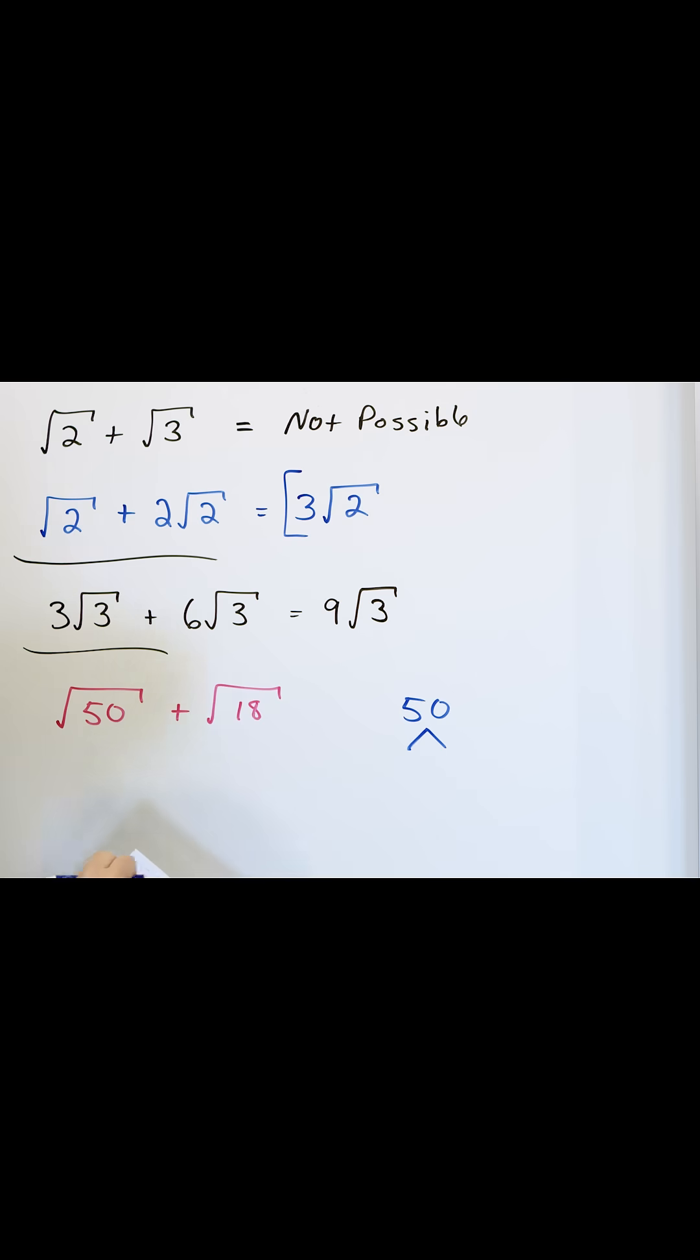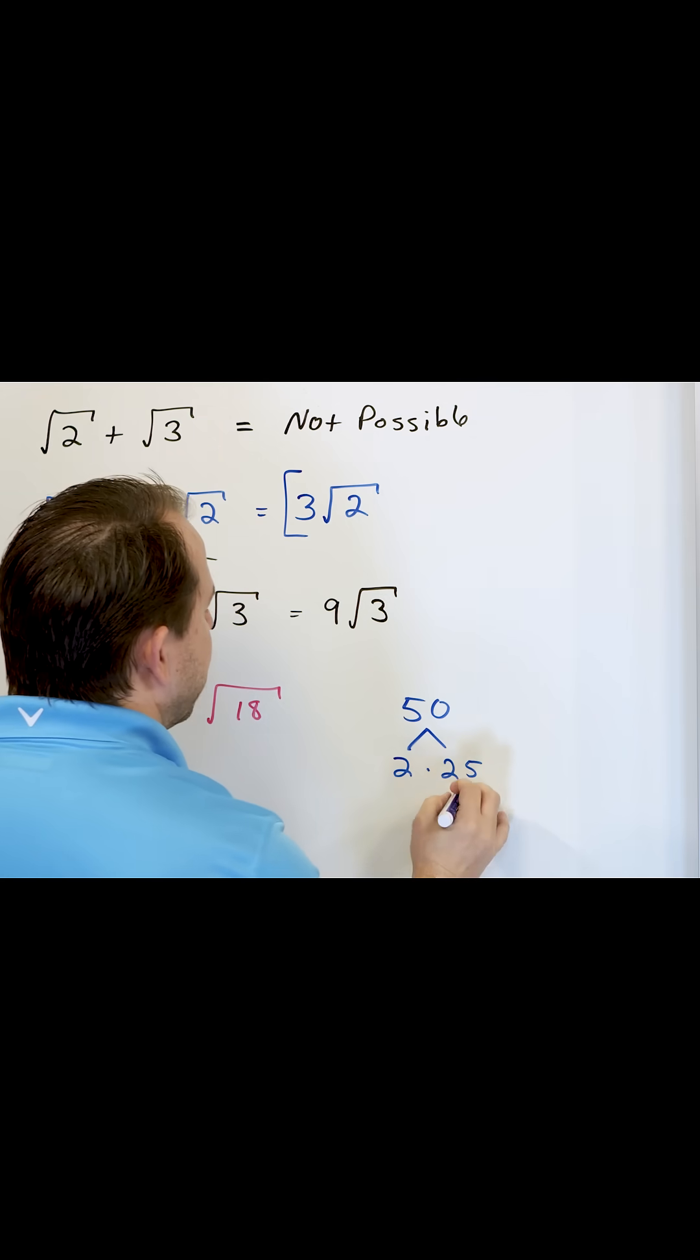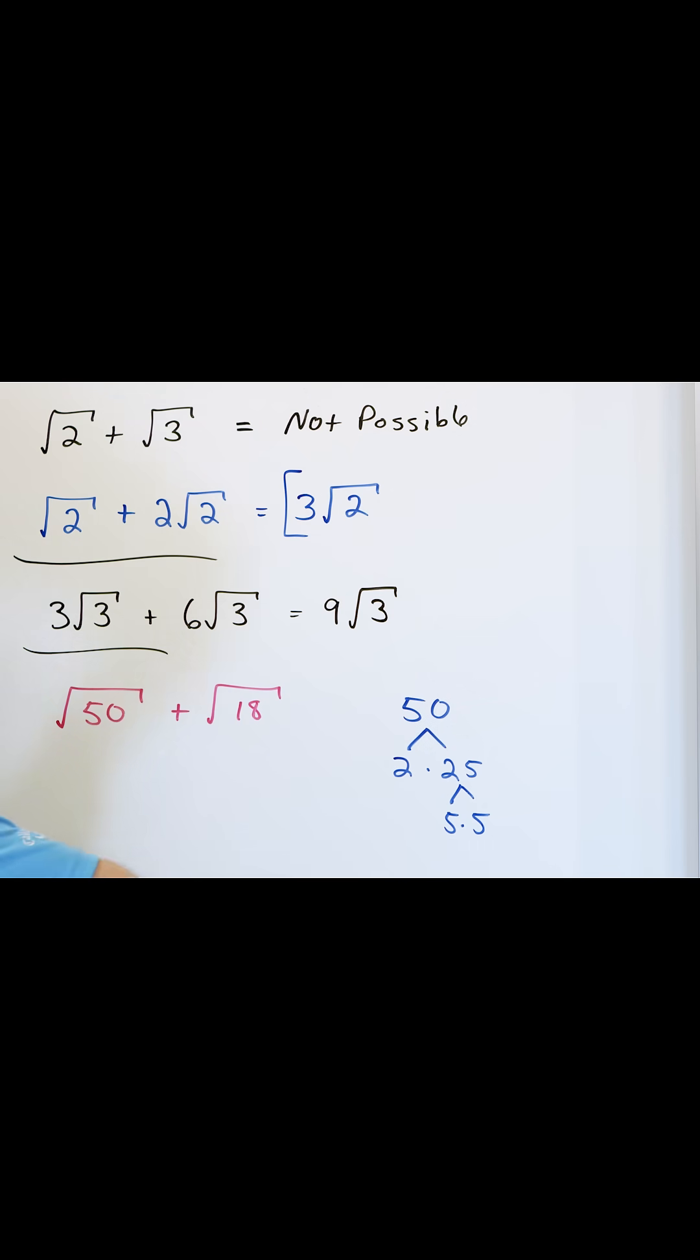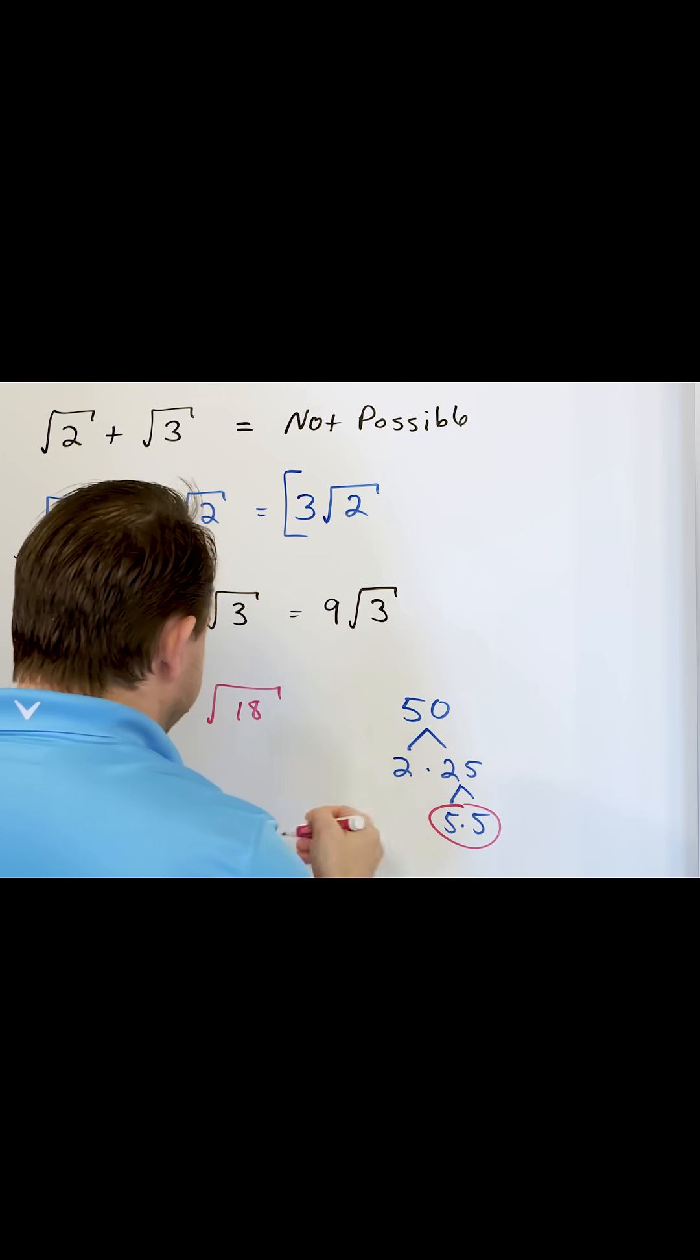So 50, doing our factor tree, is 2 times 25, and 25 is 5 times 5. Now this is the square root, right? So we're looking for pairs of numbers, and we see a pair of 5s.